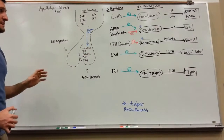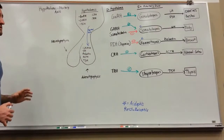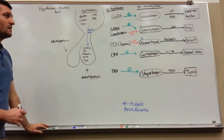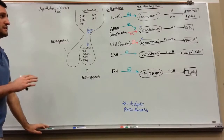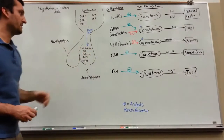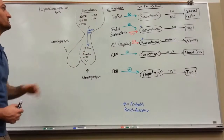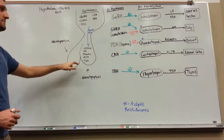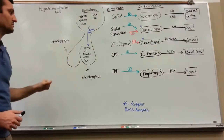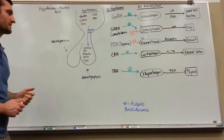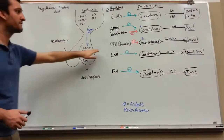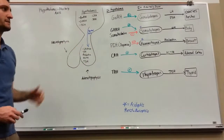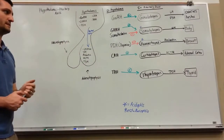So if you have any drugs that are dopaminergic agonists, that is going to be the same as a prolactin-inhibiting hormone. That's going to come down and inhibit the mammotropes from releasing their prolactin. So if you have a lot of PIH, it's going to inhibit the prolactin release.